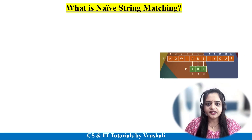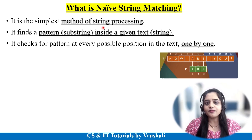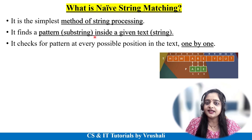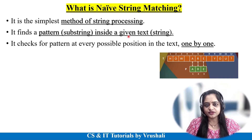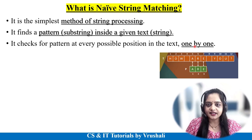So first, what exactly is the naive string matching algorithm? Basically, naive string matching is one of the basic simple string processing algorithms. If you have a large amount of data and you have to find out a particular word or particular pattern inside that data, then the naive string matching algorithm is used. This algorithm uses the concept of shifting — it checks the pattern one by one in a linear manner through the data.